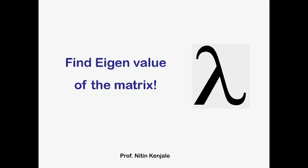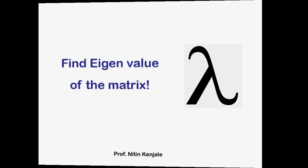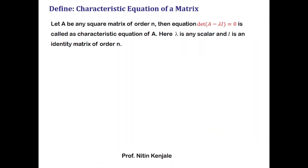Let us first understand what is characteristic equation of the matrix. Let A be any square matrix of order n. Then the equation given by determinant of A minus lambda I is equal to zero is called the characteristic equation of the matrix A. Here lambda denotes a scalar, where I is an identity matrix whose order is the same as the order of A.